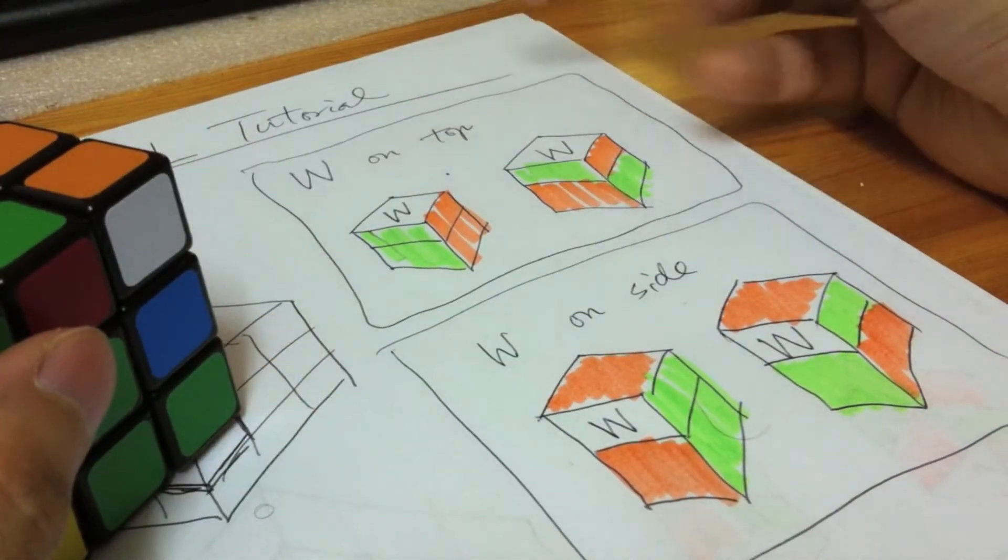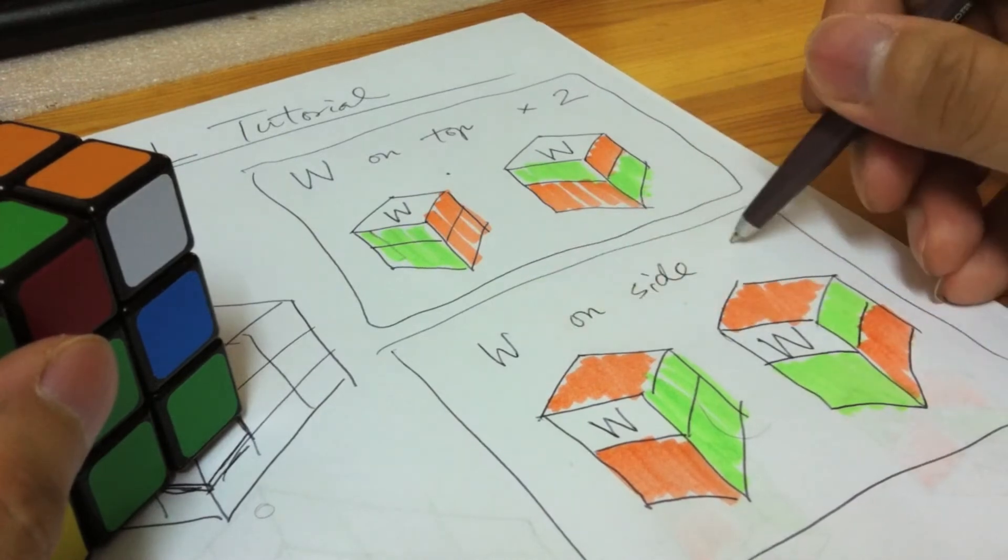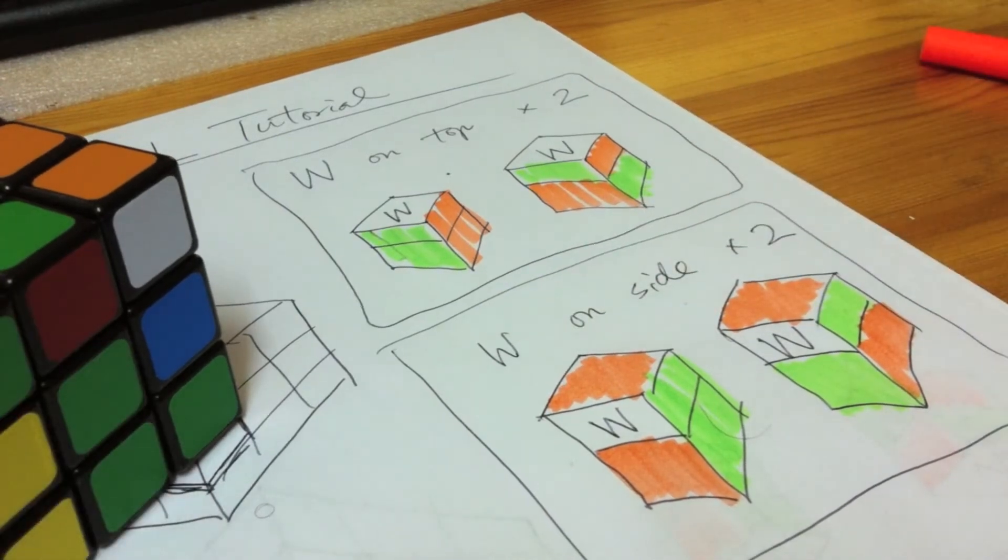So we have white on top, and there are two cases. White on the side, and two cases. Now classification is over, and here is the solution.